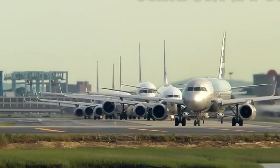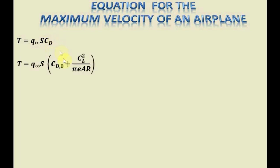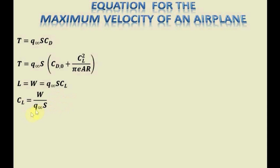For that, we need to derive an equation for the maximum velocity. We will start our derivation based on our prior knowledge that thrust equals dynamic pressure times surface area times the coefficient of drag, where CD is the total drag equal to the zero-lift drag coefficient plus the induced drag. We also know that in straight and level flight, lift must equal the weight of an aircraft, equal to dynamic pressure times surface area times the coefficient of lift. Solving for the coefficient of lift gives CL = weight divided by dynamic pressure times surface area.